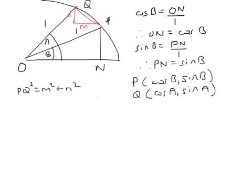But M is the length from here to here. So that's the whole of this length, the whole of that length, minus that length there. So it's the x-coordinate of P minus the x-coordinate of Q. So this works out to be cos B minus cos A, all squared.